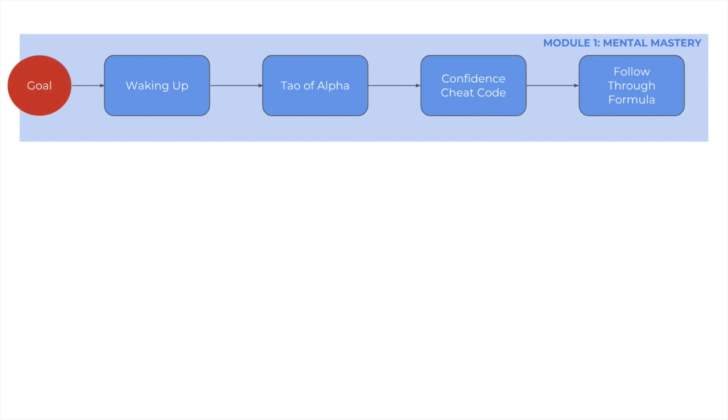Every single module within the course begins with a goal statement whereby we are exactly clear on what we're trying to achieve. Once we're clear on what we're trying to achieve, we see how each of these four lessons factors into the bigger picture as well.